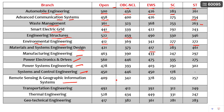For some branches, I have not mentioned certain category cutoffs because I couldn't find them on the CCMT website. This may be because there are no seats for ST category in that branch, or no admissions happened in that category. You can also go to the CCMT website to confirm. Similarly, cutoffs for Transportation Engineering are also provided.